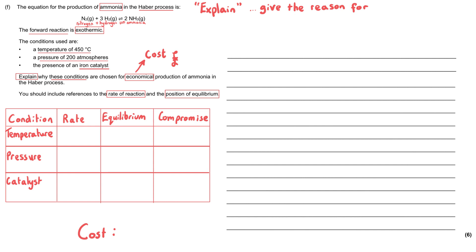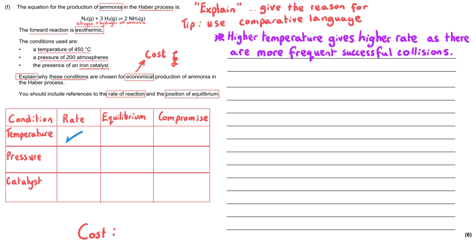My advice when you're answering this question is to take one condition at a time, so I'm going to tackle everything to do with temperature that I can think of. First of all, we need to state that a higher temperature will give a higher rate of reaction because there will be more frequent successful collisions. I really recommend using comparative language in evaluation type questions like this.